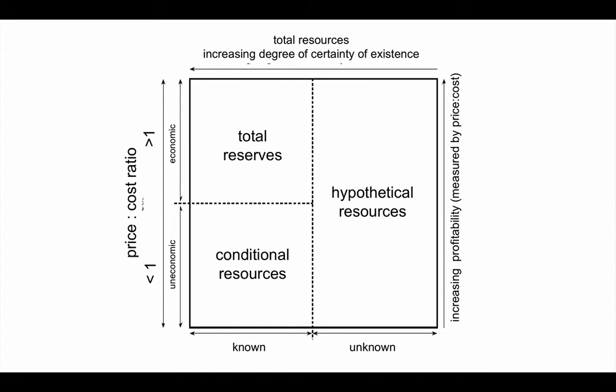There are quite a few factors that can influence the boundary between a reserve and a conditional resource. Clearly, price is one of them. If the price of a resource — for example gold — increases, what was a conditional resource can become a reserve, because it becomes worthwhile to dig it out. With the increase in gold prices over the past few years, old gold mines and even new prospects with quite a low grade may well become worth digging out, because the price has gone up while the cost to extract has perhaps stayed the same.